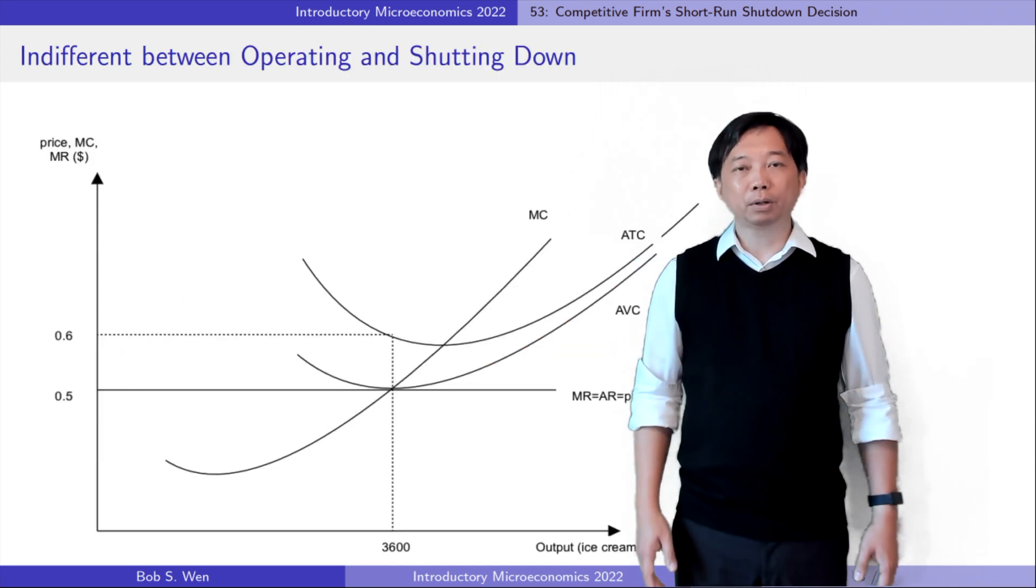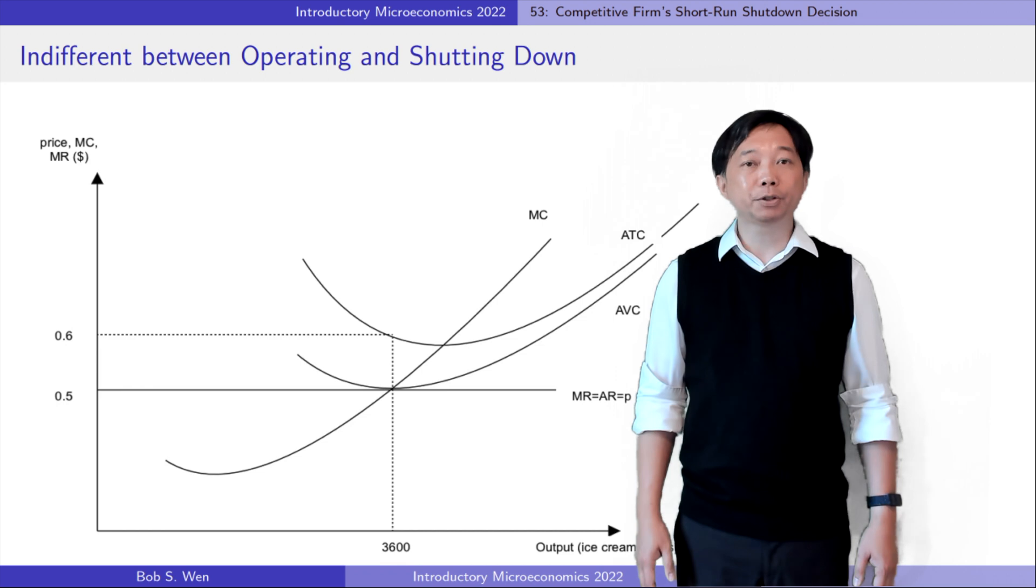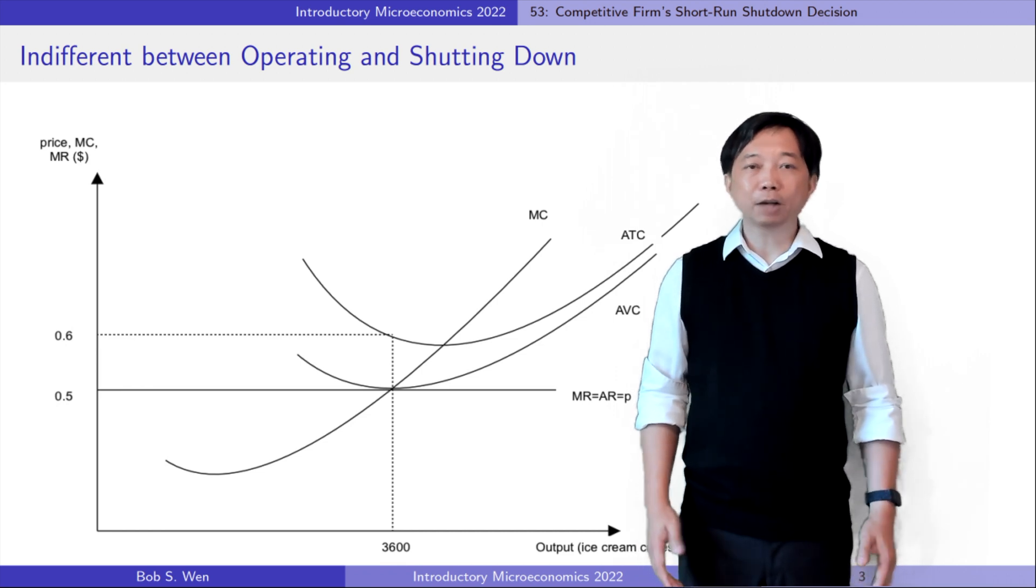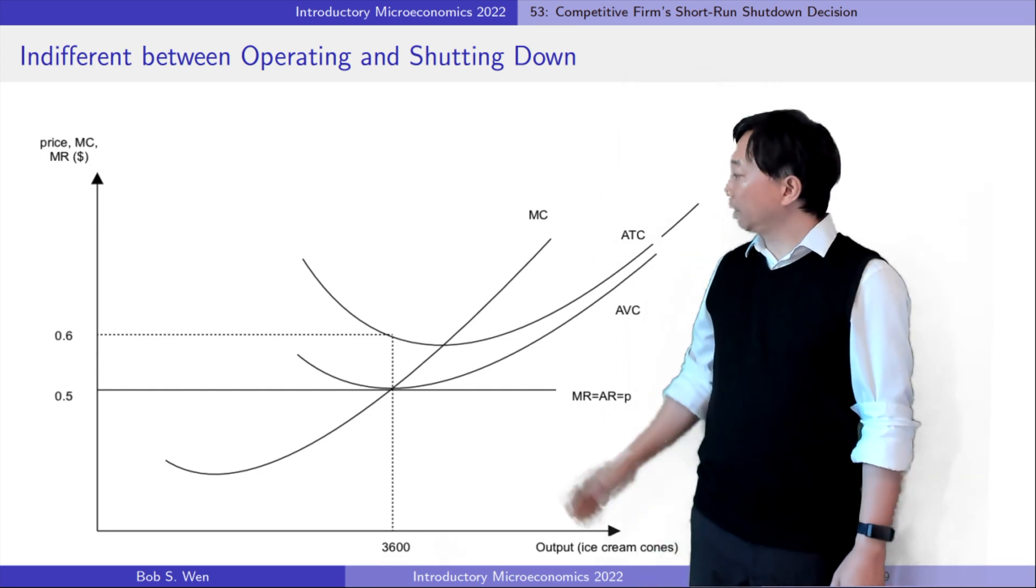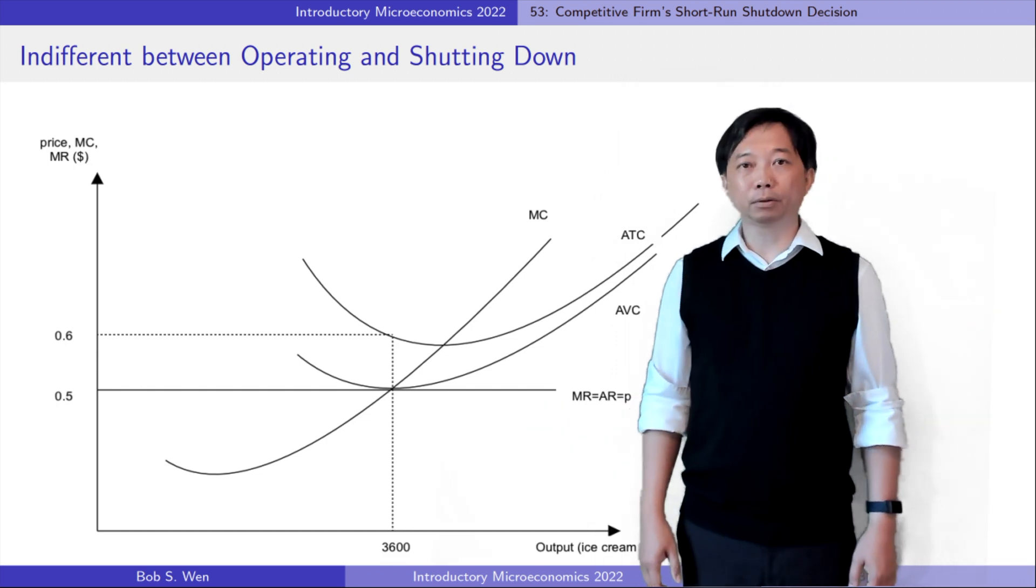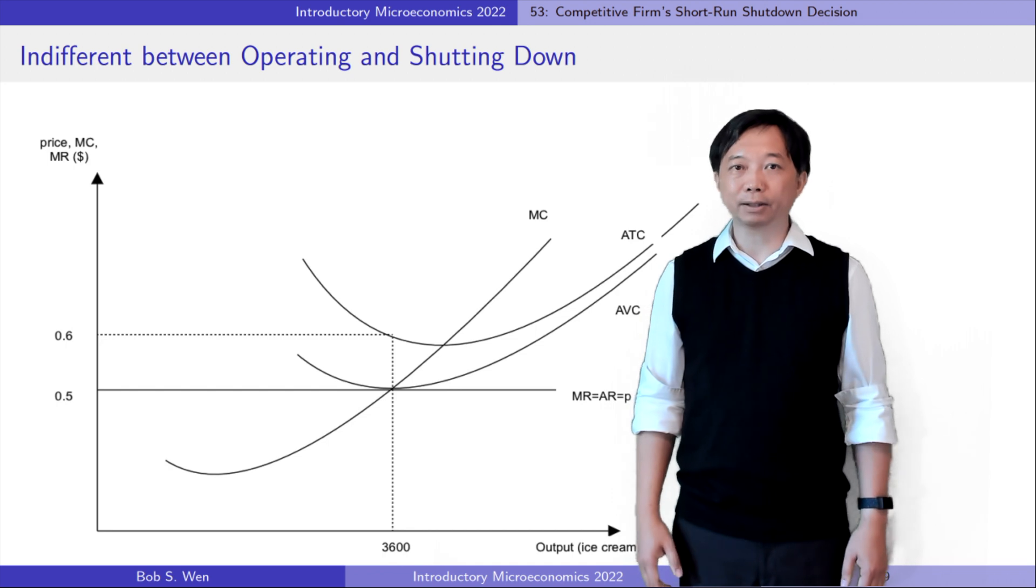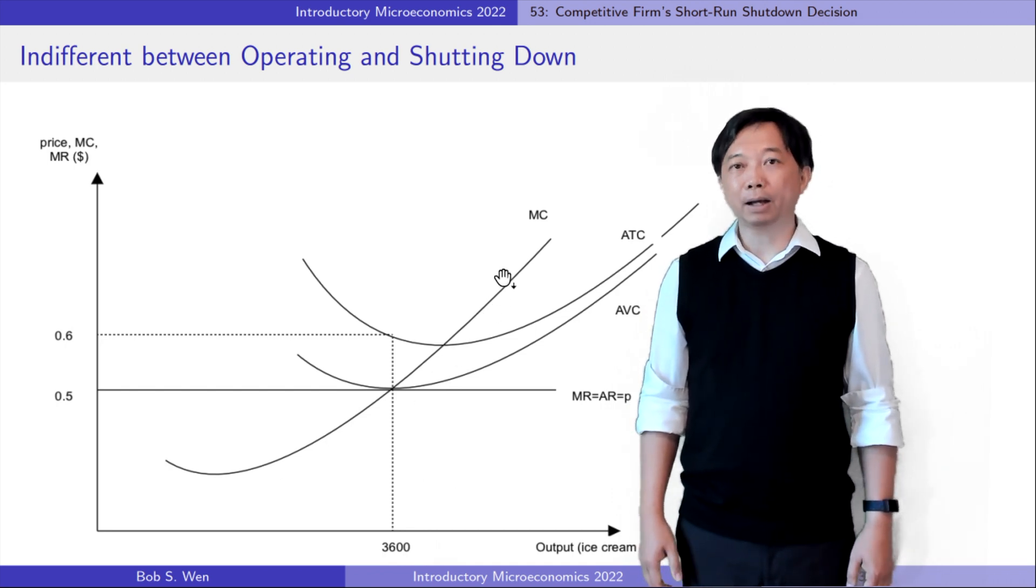An individual competitive firm always produces where the marginal cost is equal to the market price. In our example, the ice cream firm chooses 3600 ice cream cones as its output level to maximize its profit.